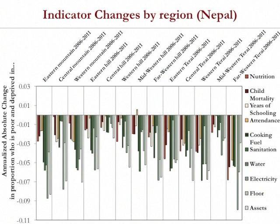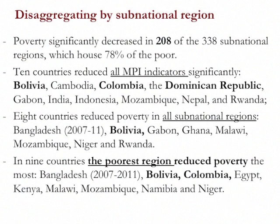When we do this across the 34 countries and 338 subnational regions, we find that poverty decreased for 208 of those regions — home to 78% of the poor people. We also find that 10 countries reduced every MPI indicator significantly, and eight of them reduced poverty in every subnational region. In nine countries, the poorest region reduced poverty the most. So we are able to study across countries the different equalizing and pro-poor trends.